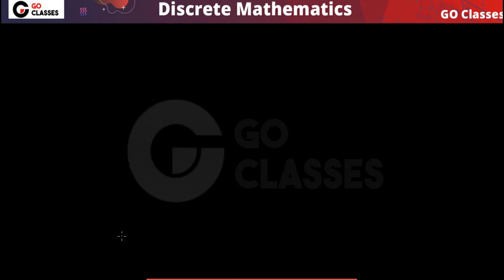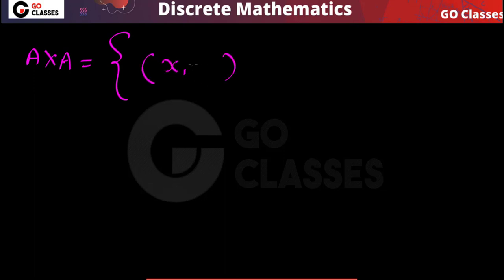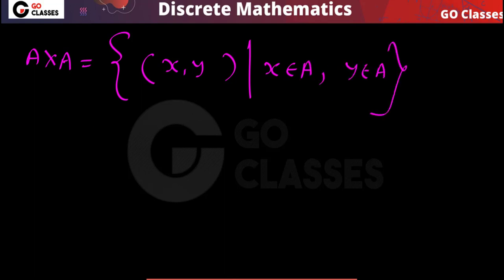This is the Cartesian product. In the Cartesian product, you have ordered pairs where the first element comes from A and the second element also comes from A, because we are finding A×A. So the first element comes from A and the second element comes from A — this is your A×A. What is the cardinality of A×A? In A×A, every element is an ordered pair.